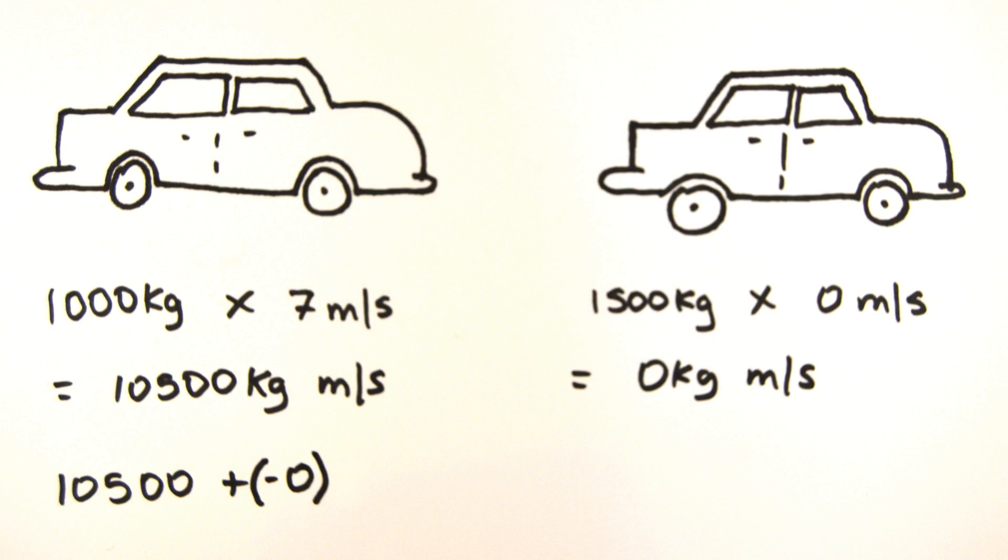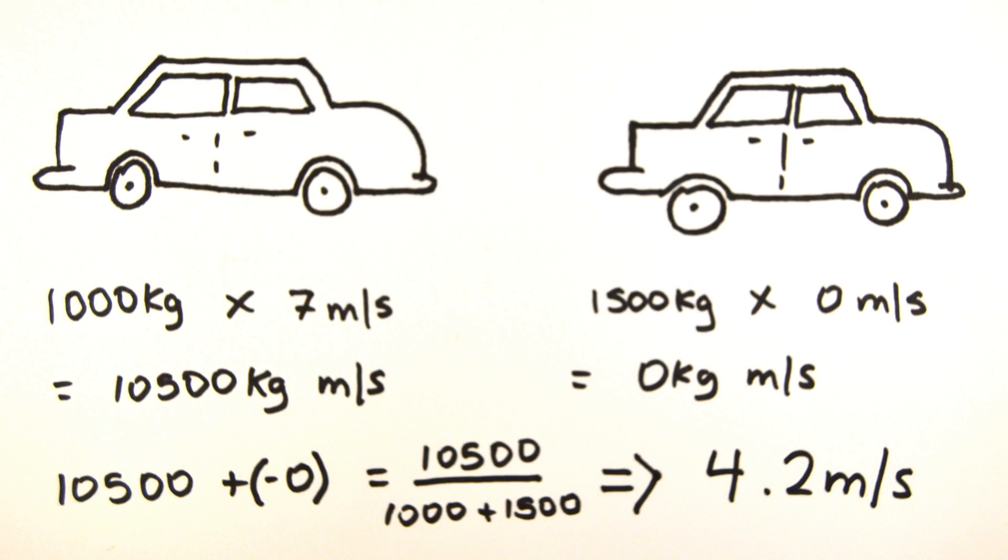Now we know the momentum before the collision, we also know it after the collision, so all we have to do now is add the masses of the two cars together and divide it from the momentum to get 4.2 meters per second.